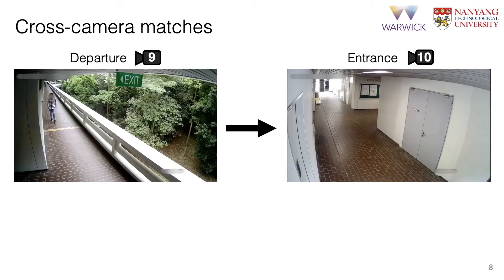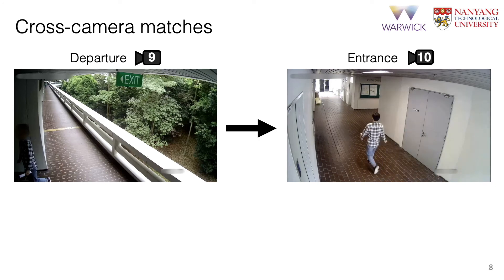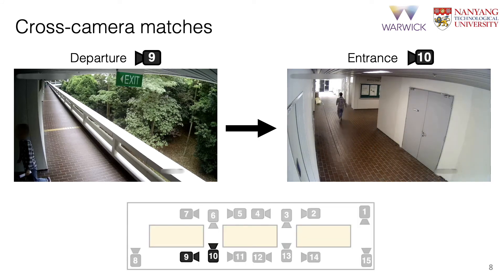Here is an example departure-entrance pair found using our labeling procedure. We see the departure of an individual from camera 9 and the entrance in camera 10. By referring to the network topology, we can see that these two cameras are situated next to each other. We verify 2,300 such pairs. With our data release, we provide these match pairs and pre-computed tracking information.